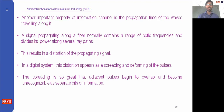A signal propagating along the fiber contains a range of optical frequencies and divides its power along several ray paths. This results in distortion of the propagating signal. In a digital system, this distortion causes spreading and deformation of pulses — the pulse shape gets deformed. The spreading can become so great that adjacent pulses begin to overlap and become unrecognizable as separate groups of information, meaning you lose the ability to distinguish the transmitted information.